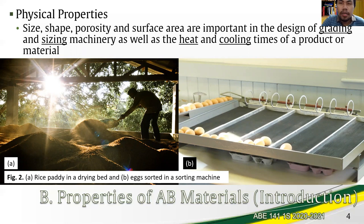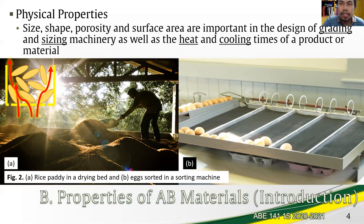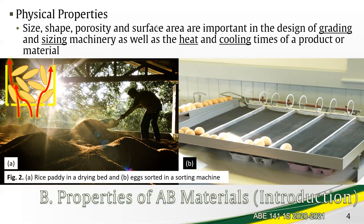The uses of these properties in agricultural operations are emphasized by their applications in grading and sizing machinery and in heating and cooling processes. In drying, as shown in Figure 2A, the grains are positioned so that air is allowed to pass through them, because the bulk of the material has spaces or porosity. While this porosity varies depending on compaction of the material, we can usually determine a range of values true for a specific rice variety or moisture content.